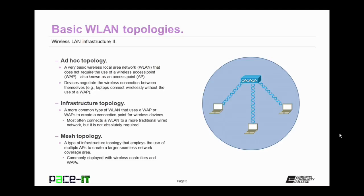Then there's the infrastructure topology. It's a more common type of wireless local area network that uses a WAP or multiple WAPs to create a connection point for wireless devices. Most often it's used to connect a wireless network to a more traditional wired network, but that wired network is not absolutely required.